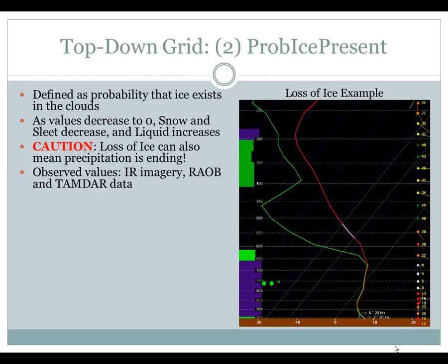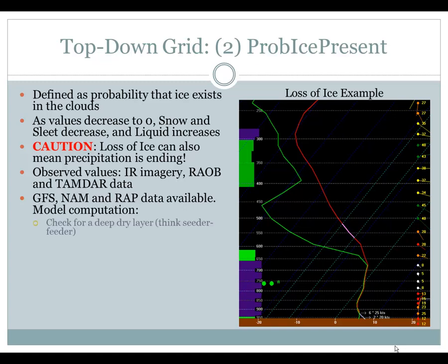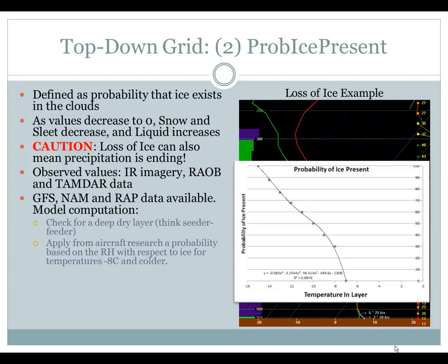Observed values for this grid can be found in IR imagery, RAOB, and TAMDAR data. GFS, NAM, and RAP data are available as well. How those models compute Prob Ice Present: the first part is checking for a deep dry layer — think the seed or feeder process, a review from the top-down science training. Then we apply aircraft research probabilities based on the RH with respect to ice for temperatures at minus 8°C and colder. As temperatures get colder, the probability of ice in the cloud increases. More details are in the POUT documentation.